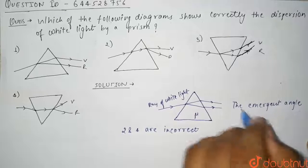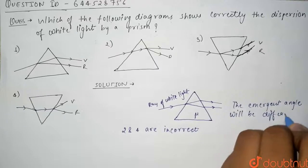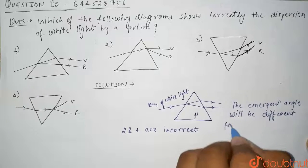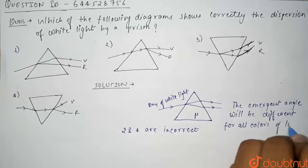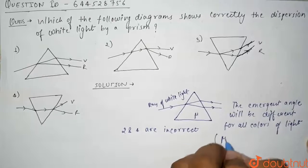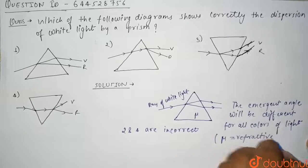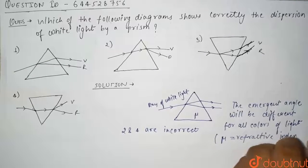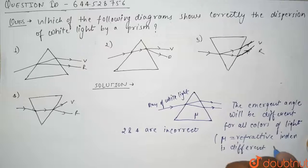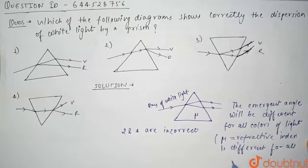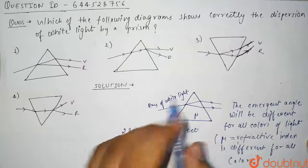...different for all colors of light, because μ, that is refractive index, is different for all colors. Since the emergent angle will be different for all, so these two emergent rays cannot be parallel.